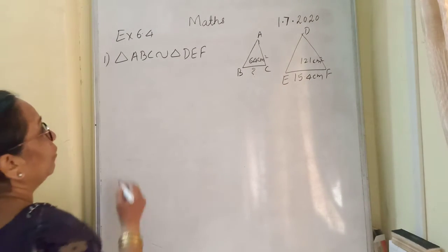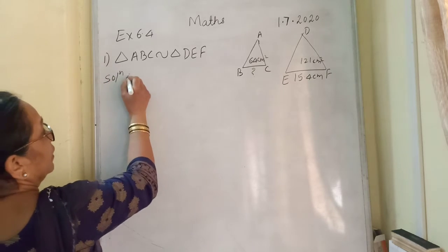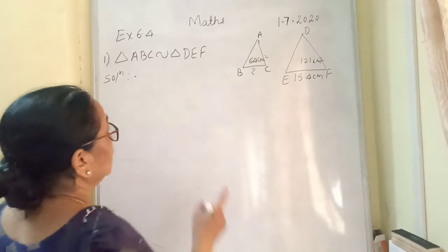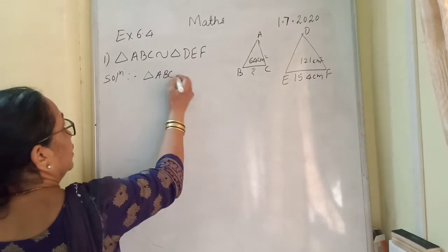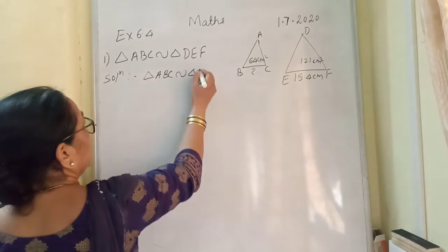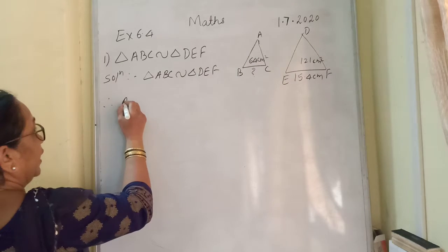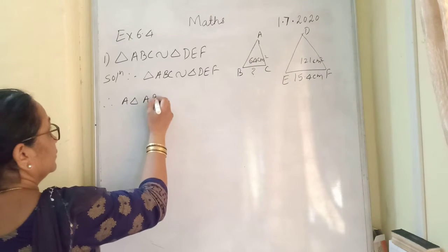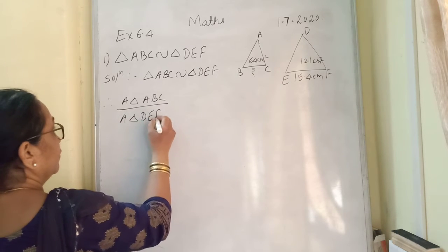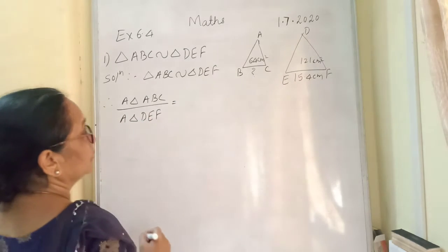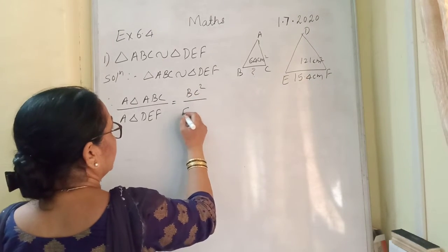Now, we know that solution, because here it is given 5, therefore it will be solution. Triangle ABC is similar with triangle DEF. Therefore, area triangle ABC upon area triangle DEF is equal to BC square upon EF square.